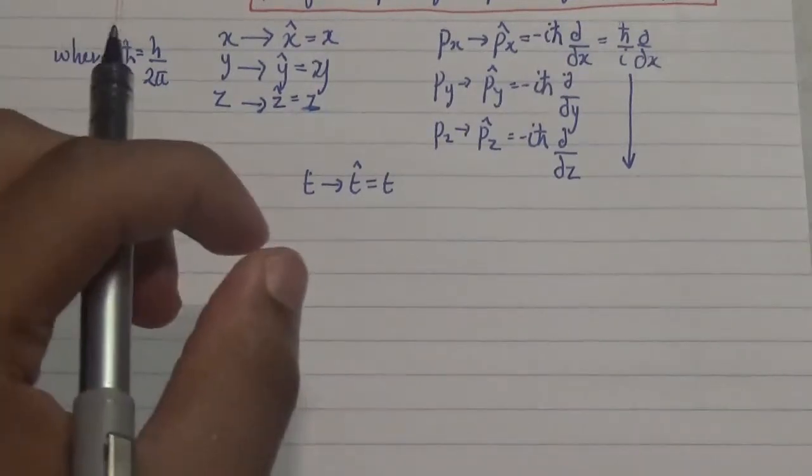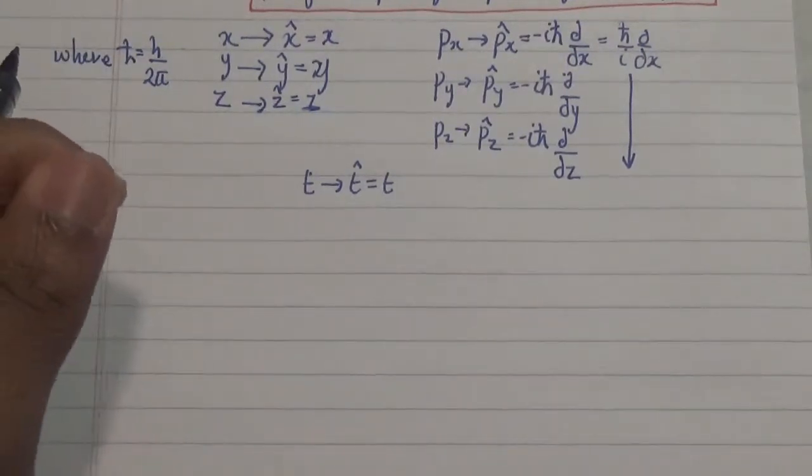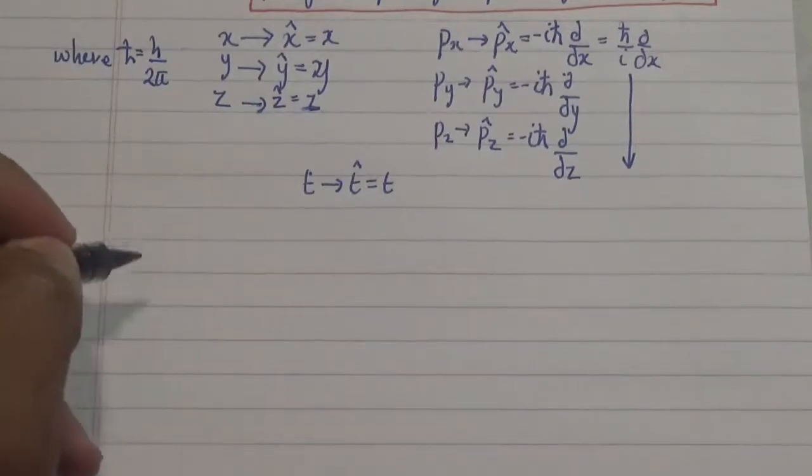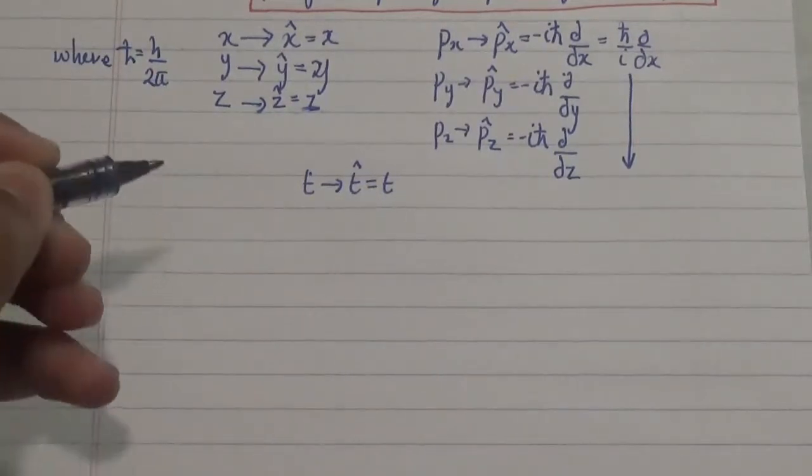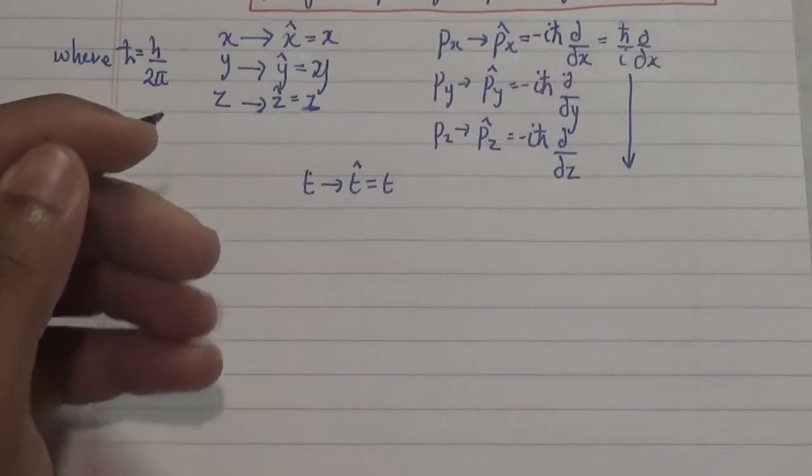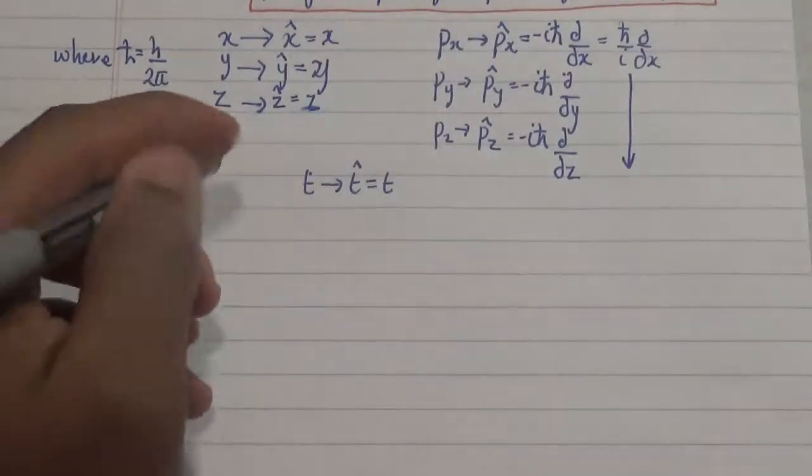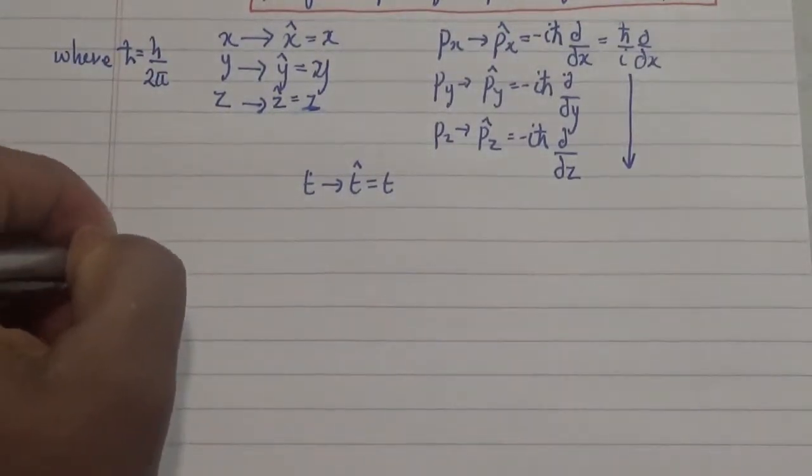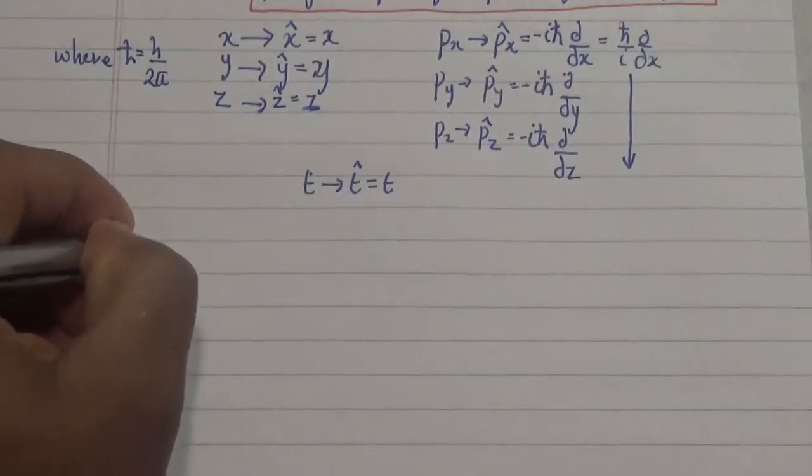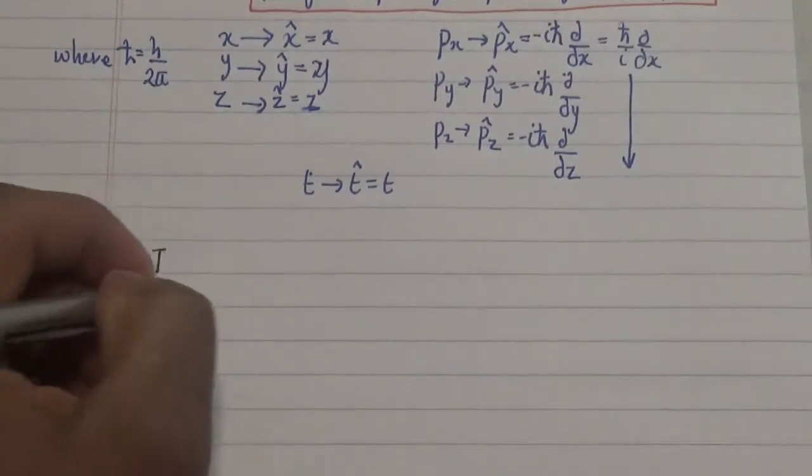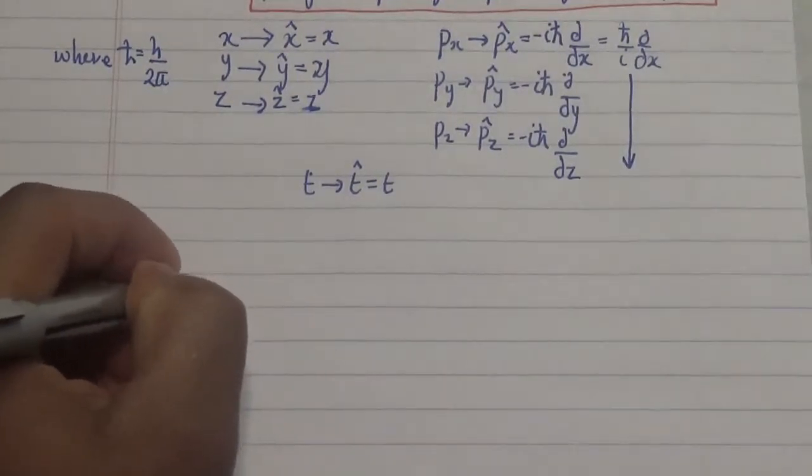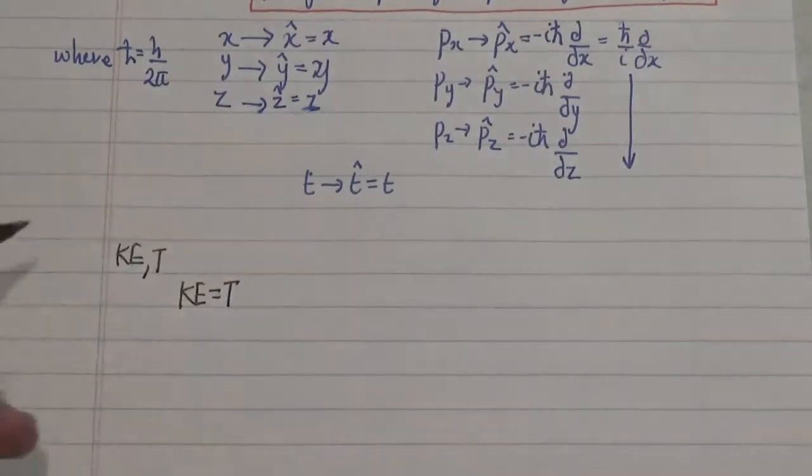Looking at this solution here, we know that in classical mechanics, the classical expression for kinetic energy which is expressed as T in this case is equal to half mv squared.